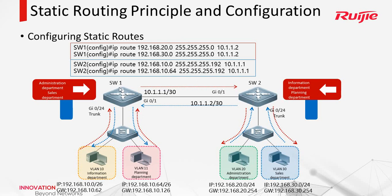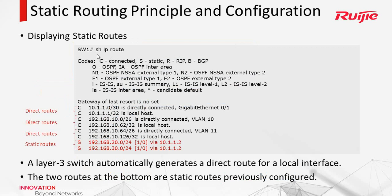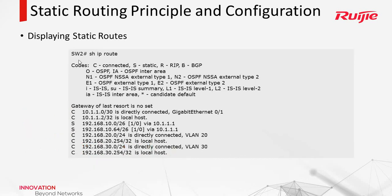This is because SW1 is connected to this PC directly and also connected to SW2 directly, but it is not connected to the other PCs, so it needs static routes — and the same applies to SW2. We can use 'show IP route' to check the static routes. Direct routes are generated automatically, while static routes are manually configured.